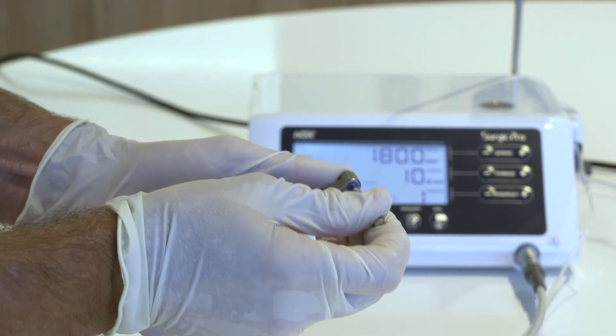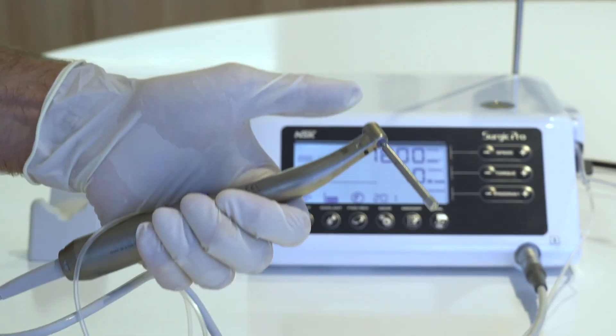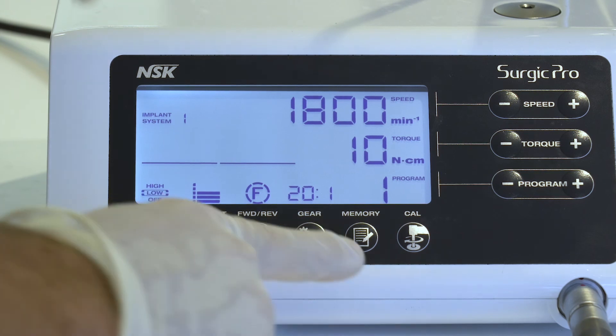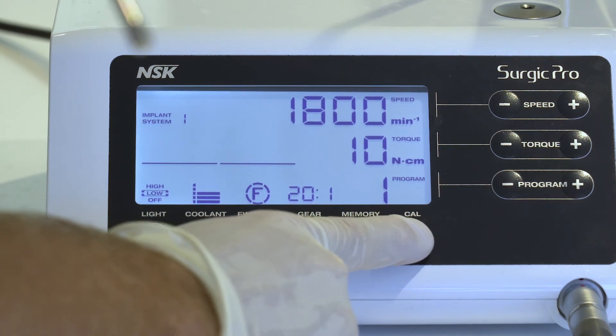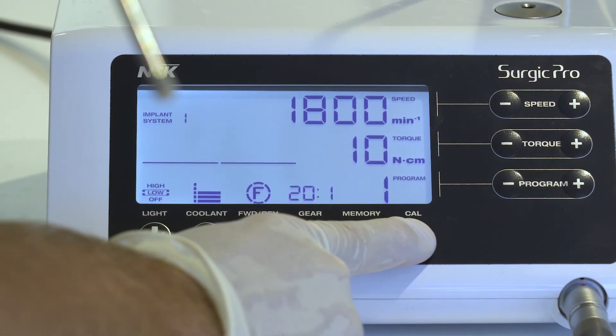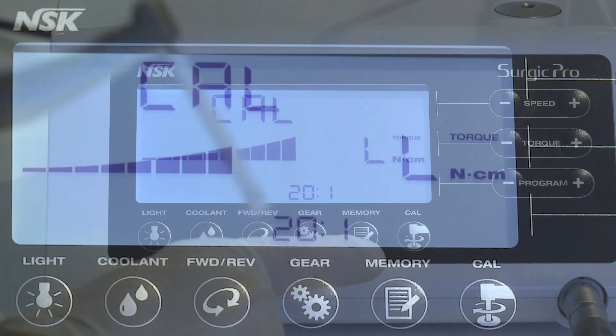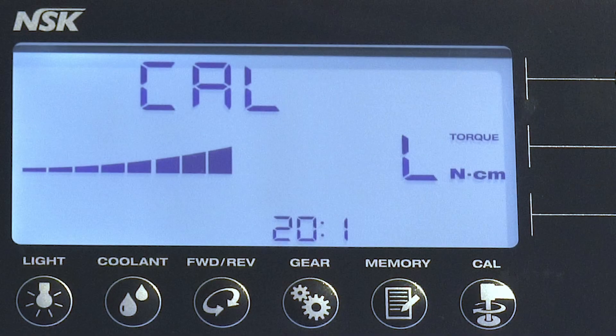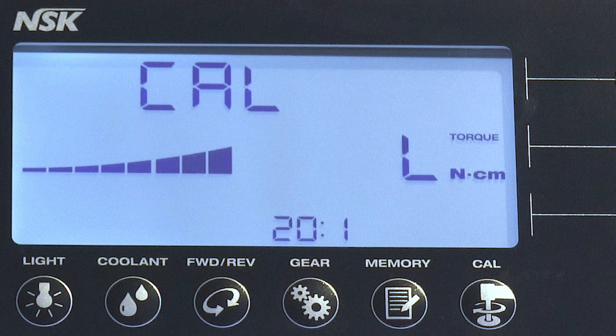Press the calibration bird to the handpiece and follow this step-by-step process. Press the cal key for about two seconds. There will be a beep and the display will switch to calibration mode. No load calibration. Torque display shows L. Hold the motor in your hand and make sure that the L is displayed on the torque display.